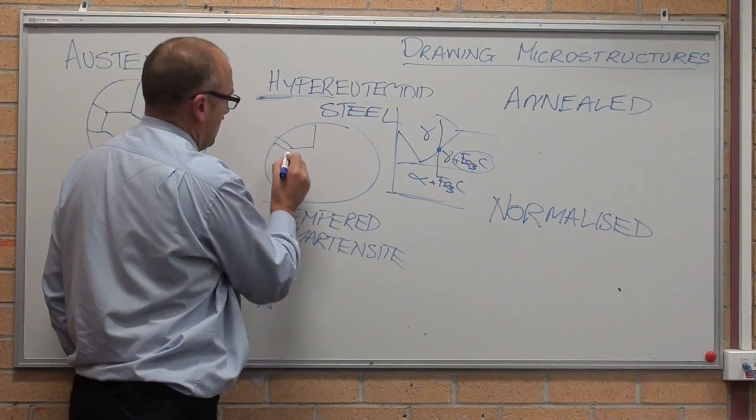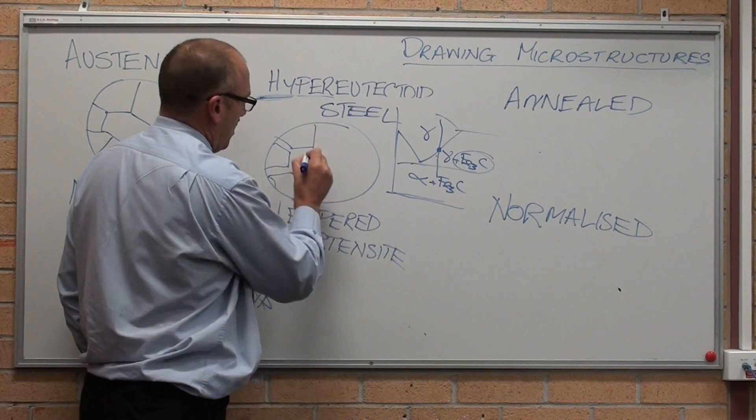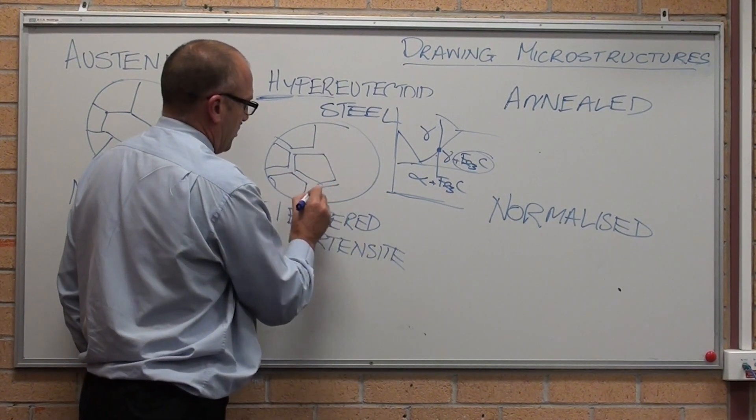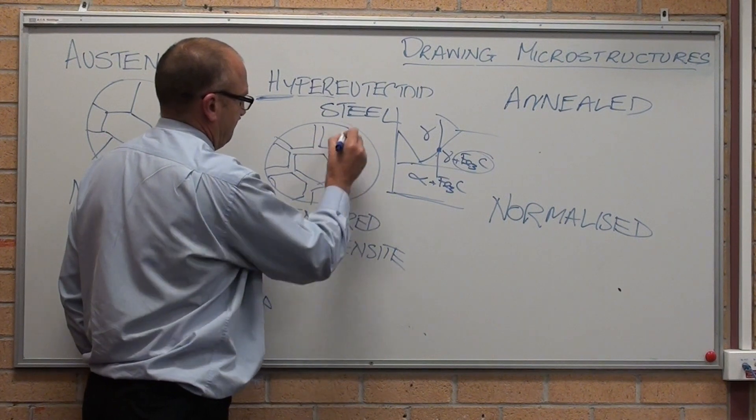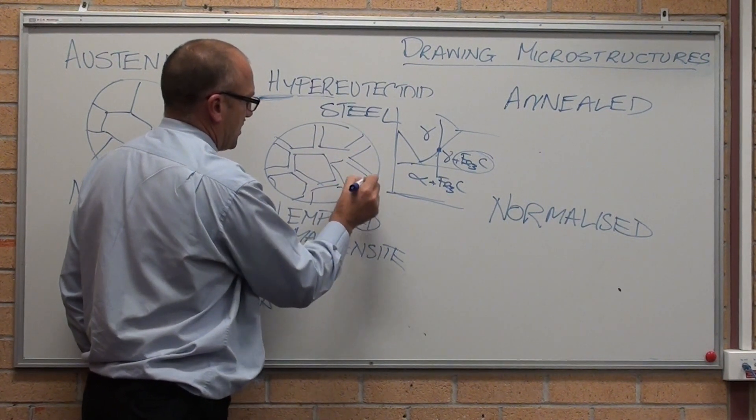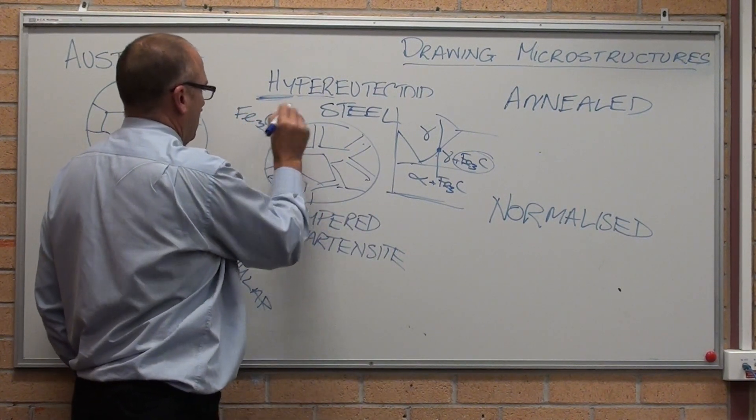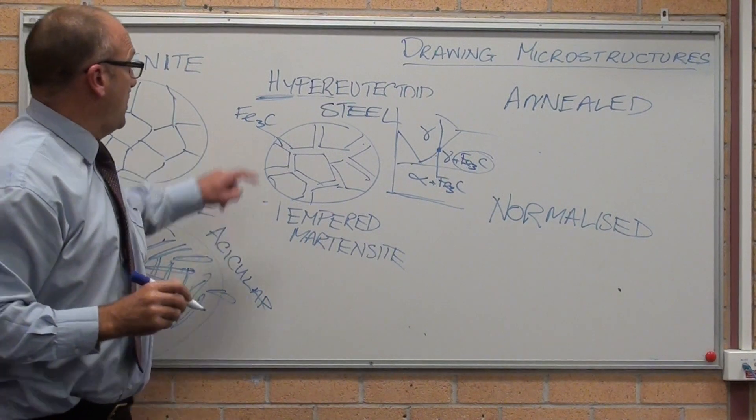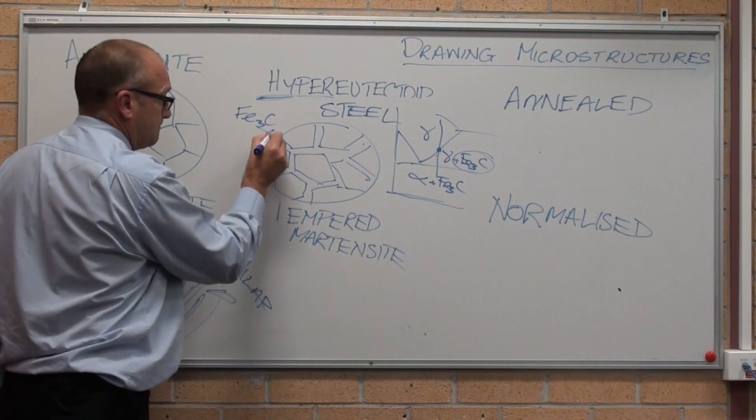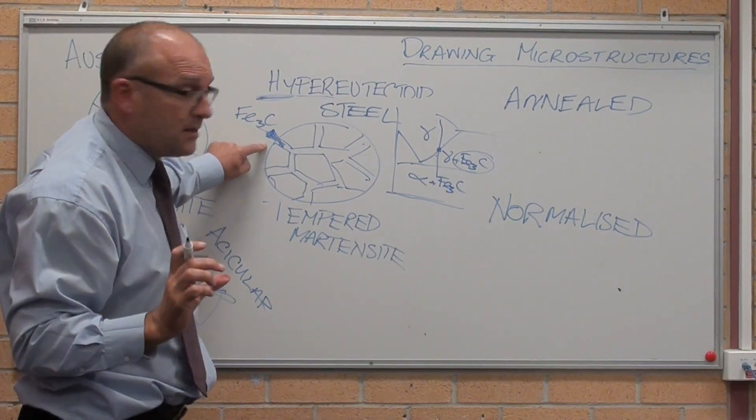the first thing that forms is iron carbides. So we get a continuous network of carbides forming at the boundaries. High-carbon steels are brittle. That's iron carbide. So we get iron carbide as a continuous network. That's brittle. That's hard.